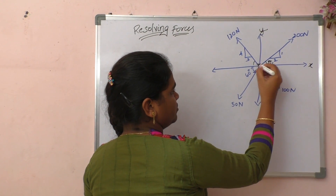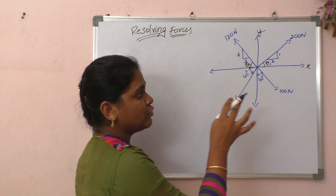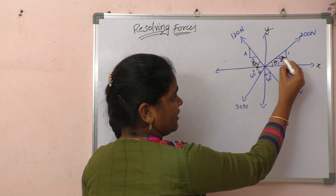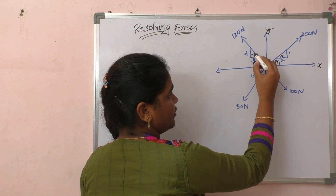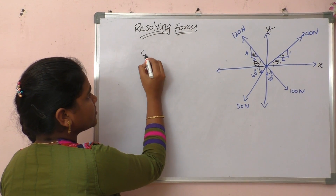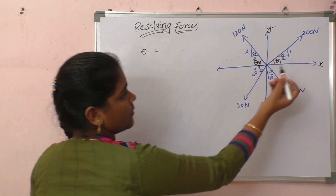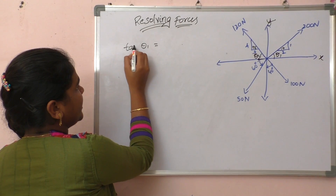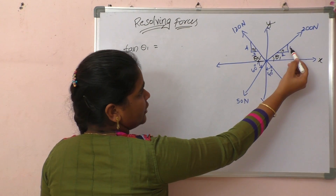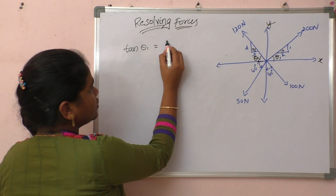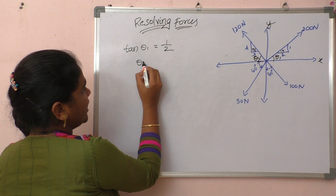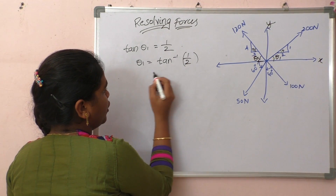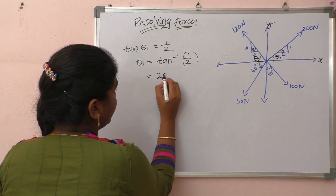To find theta1 and theta2: theta1 equals opposite over adjacent, so tan(theta1) equals 1/2, because the opposite and adjacent values are given. Therefore theta1 equals tan inverse of 1/2, which gives a value of around 26.56 degrees.